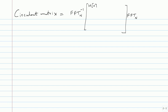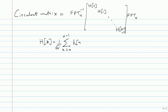What goes on the diagonal is H(0), H(1), all the way down to H(N-1), where capital H(k) equals the sum from n=0 to N-1 of h(n) times e^(-j 2π nk/N), possibly with a 1/√N factor. This is the standard result: circular convolution of two sequences becomes pointwise multiplication of their FFTs.